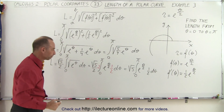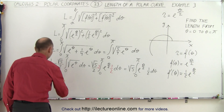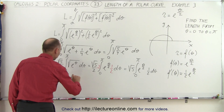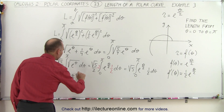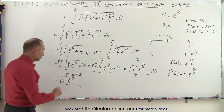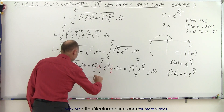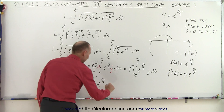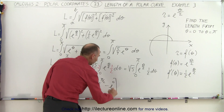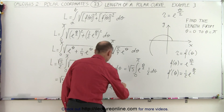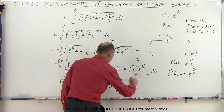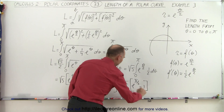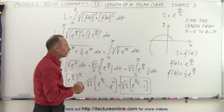Now we're ready to integrate. We get the square root of 5 times e to the theta divided by 2, evaluated from 0 to pi. Plugging in the upper value gives e to the pi divided by 2, minus when we plug in the lower value, e to the 0. Since e to the 0 is equal to 1, this becomes the square root of 5 times e to the pi divided by 2, minus 1. And this would be the length of that curve.